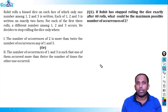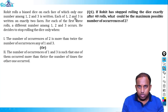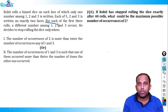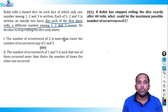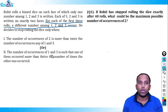Rohit rolls a biased dice, each face of which has only one number among 1, 2, and 3 written on it. For each of the first three rolls, a different number among 1, 2, and 3 occurs — this is an important condition. He decided to stop rolling the dice only when the number of occurrences of 2 is more than twice the number of occurrences of 1 or 3.